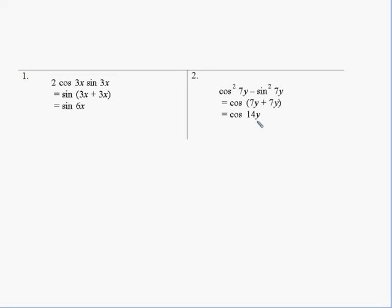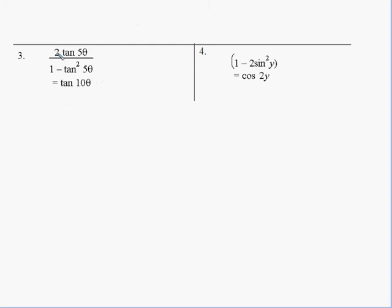Number 3: 2 tan 5θ over 1 - tan²5θ. Make sure they're the same angles, so we can go, okay, that's going to have to be coming down to tan 10θ, because it's a reversal of that rule we had before. The 1 - 2sin²y we've written as cos 2y.